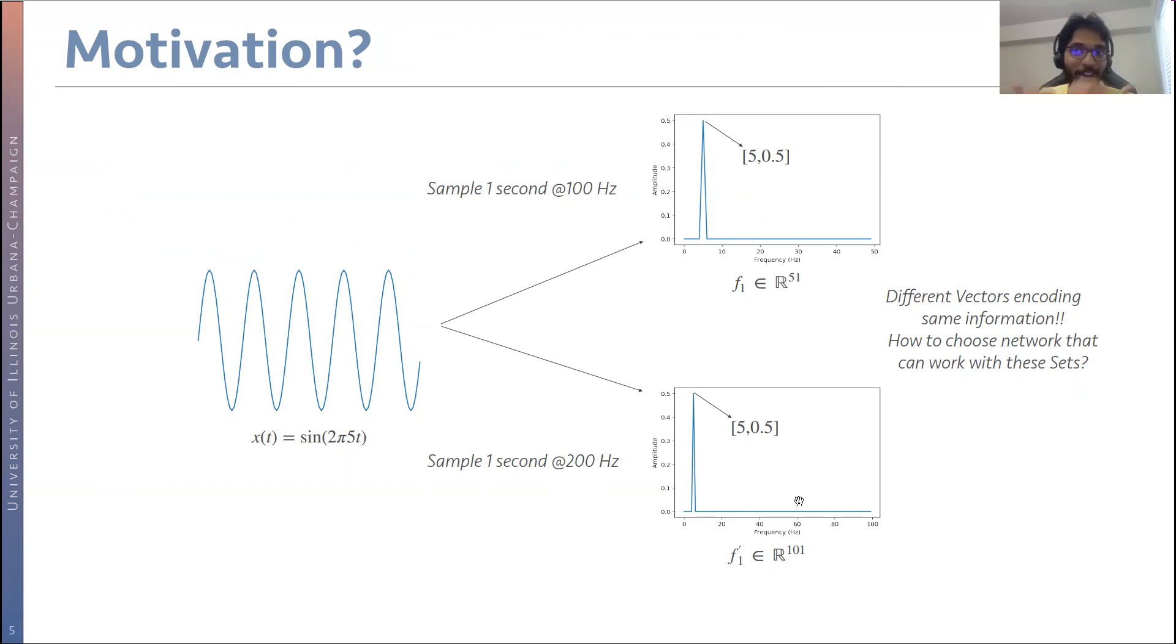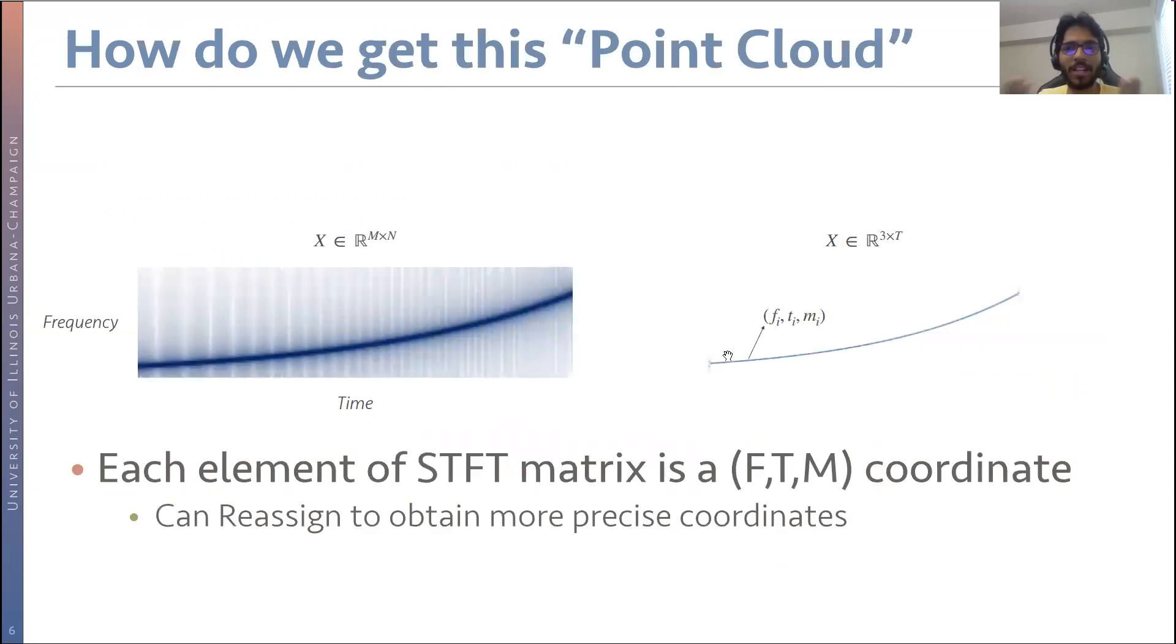So the thing is, we have these different dimensional vectors, but they encode the same information. So how to get over this? The information embedded in both of these DFTs is the fact that this is a 5-hertz sinusoid. So more generally, how do we obtain such a point cloud representation from our audio?